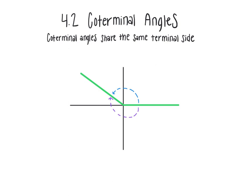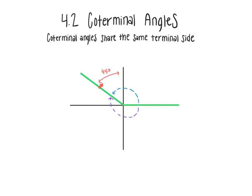A couple of quick reminders: one quadrant of the quadrant plane is always equal to 90 degrees, and if I add all four quadrants together that gives me 360 degrees, which is a full circle. In this situation, my terminal side is cutting the second quadrant in half, which means that's about 45 degrees, and this is a full 90 degrees, so this leaves me with an angle that is 135 degrees.